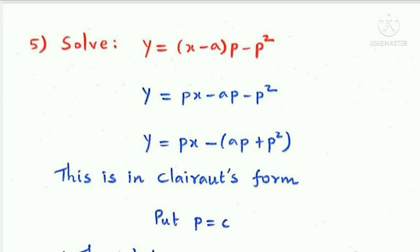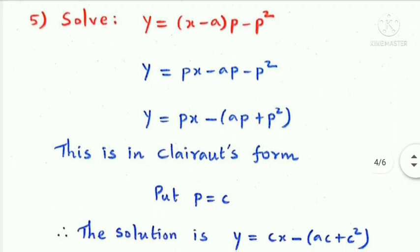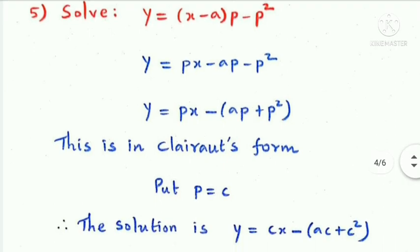This is in Clairant's form, y = px + f(p). Putting p equal to c and substituting, the solution is y = cx - ac + c².